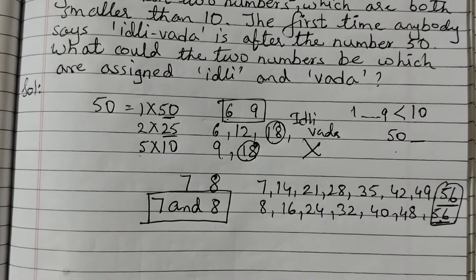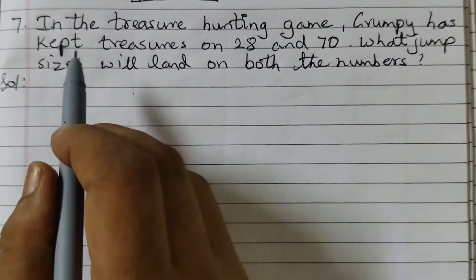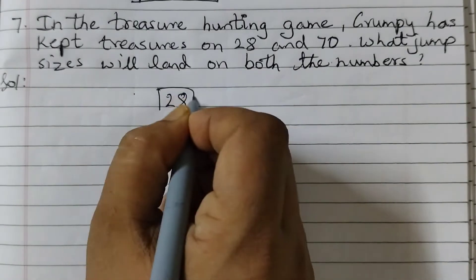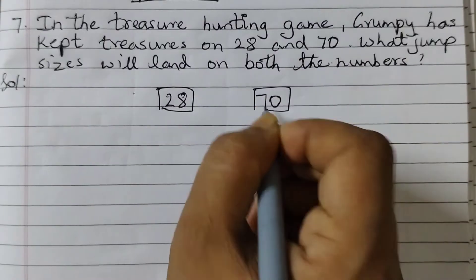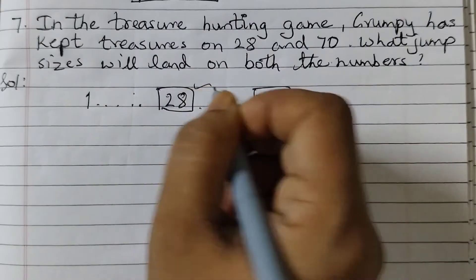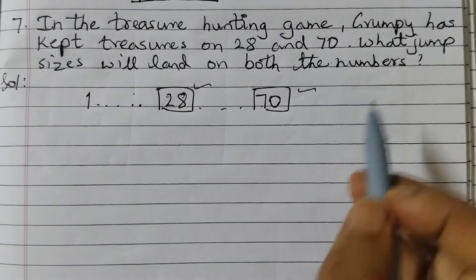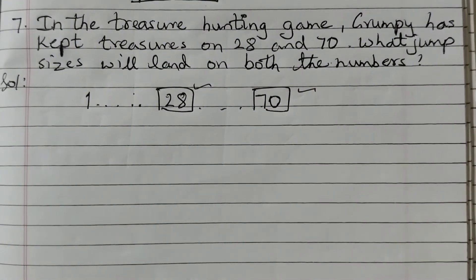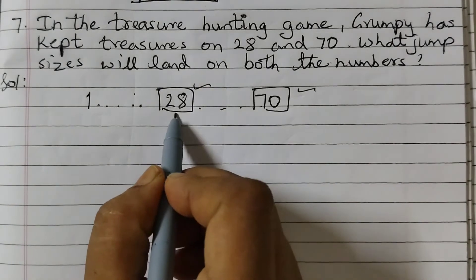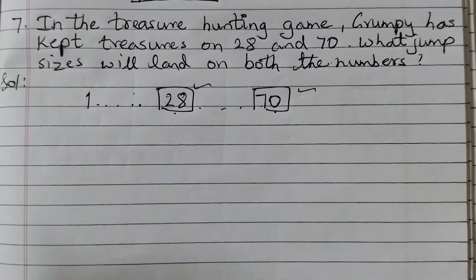Now we will move on to question number 7. In the treasure hunting game, Grumpy has kept treasures on 28 and 70. He starts with number 1 and goes till 70. We need to find which jump sizes will land on both numbers — so we need to find the common factors of 28 and 70.